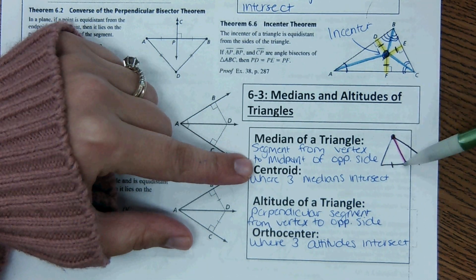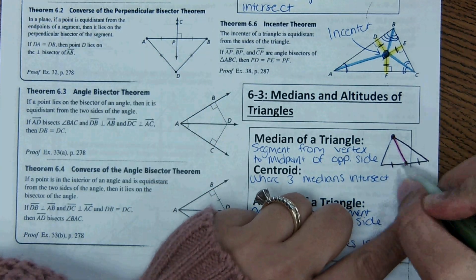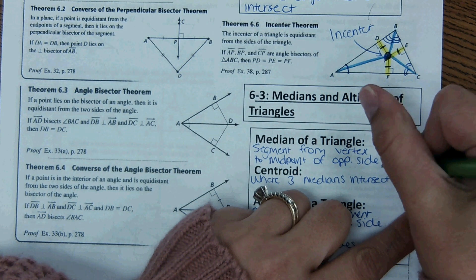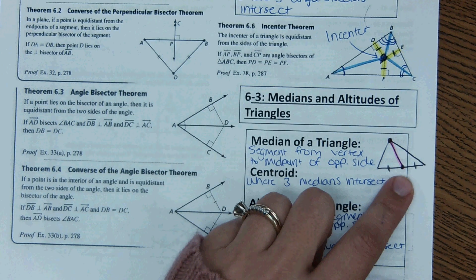A median is a segment from the vertex, so a corner, to the midpoint of the other side. The midpoint of the other side would break this segment up into equal parts, being that this side of the segment is the same length as this side.